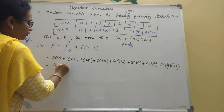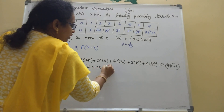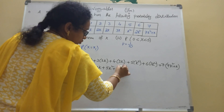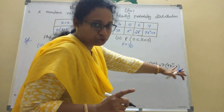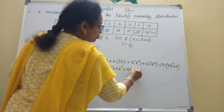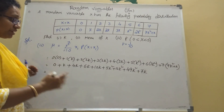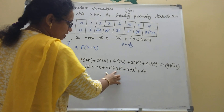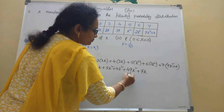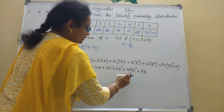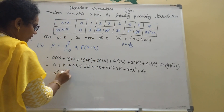Simplifying: 0 is 0, 1 times k is k, 2 times 2k is 4k, 3 times 2k is 6k, 4 times 3k is 12k, 5 times k-squared is 5k-squared, 6 times 2k-squared is 12k-squared, and 7 times 7k-squared is 49k-squared. For k-squared terms: 49 plus 12 plus 5 equals 66k-squared.